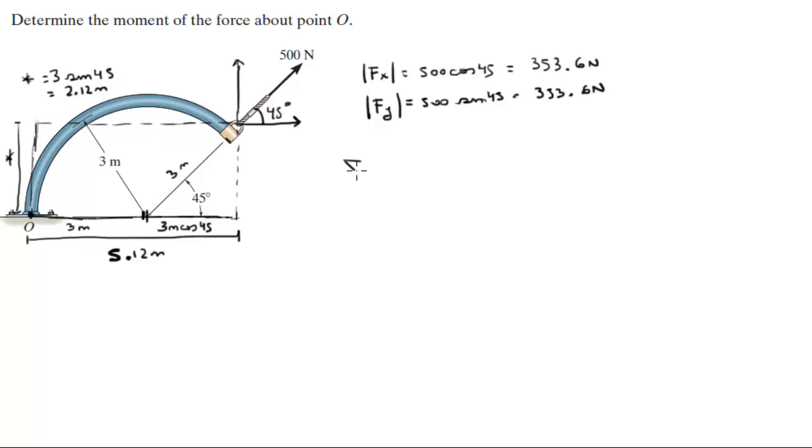Going counterclockwise is positive. So these two forces are the same, 353.6 newtons and 353.6 newtons. This one going up is affecting this lever arm and it's making it go counterclockwise. Counterclockwise is positive, so it's positive 353.6 newtons times the length of the lever arm, which comes out to be 5.12 meters.